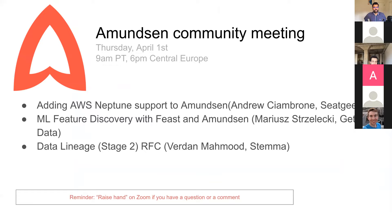The first topic is on adding AWS Neptune support to Amundsen, and Andrew from SeatGeek is going to be sharing more about that. After that, we have ML feature discovery with Feast and Amundsen, and Marius from GetInData is going to be chatting about that. This is based on a blog post shared in the community pretty recently. And lastly, we are making progress on lineage — the first stage is in development, and for the second stage we have some RFCs in progress that Verdun from Stemma is going to share more about.